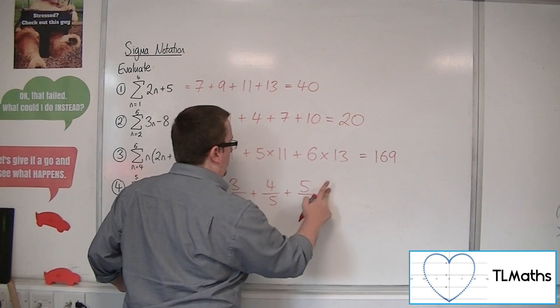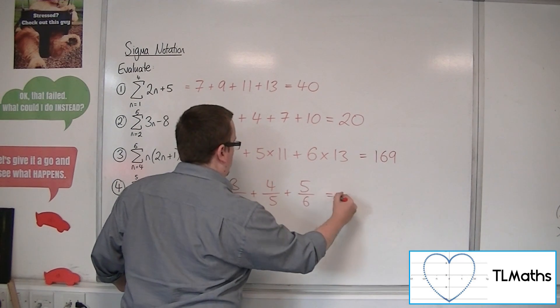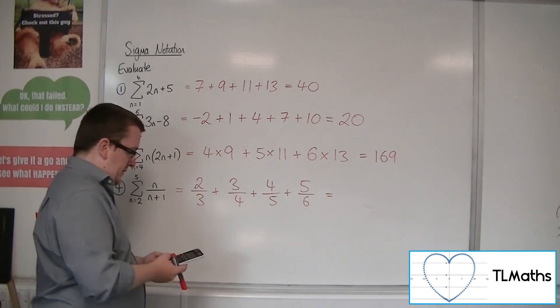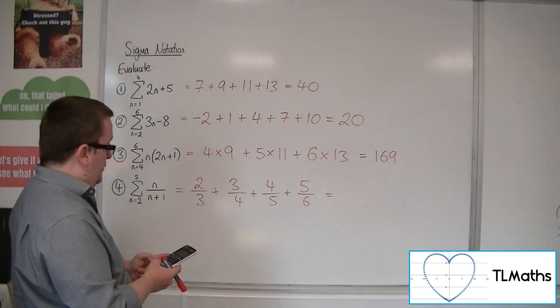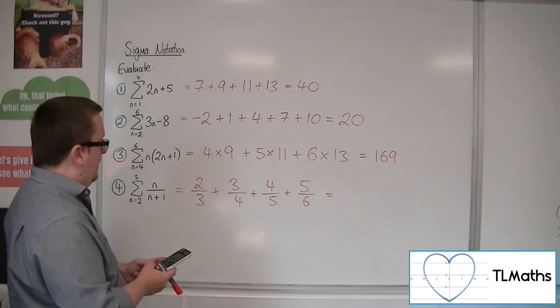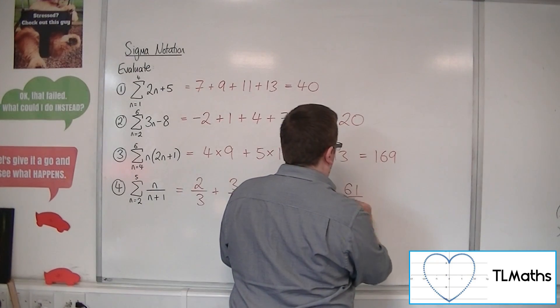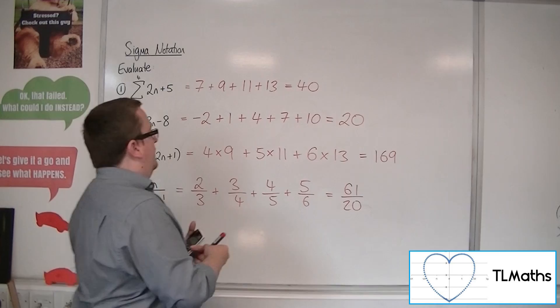Oh, and that's as far as I need to go. So, OK, so we've got 2 thirds plus 3 quarters plus 4 fifths plus 5 sixths. And that makes 61 twentieths. OK.